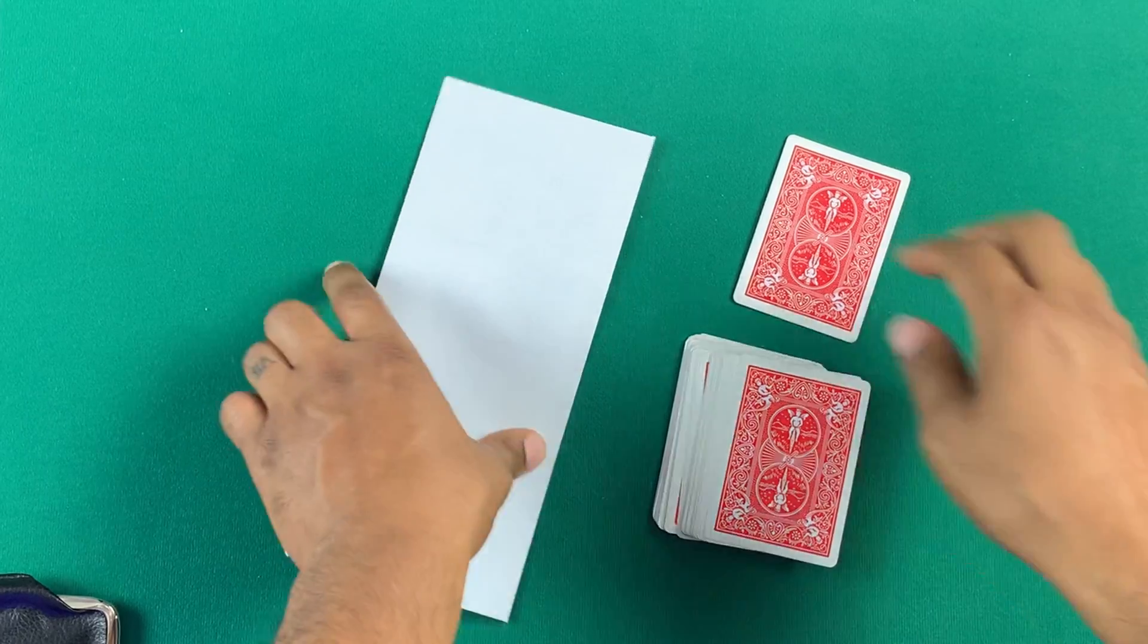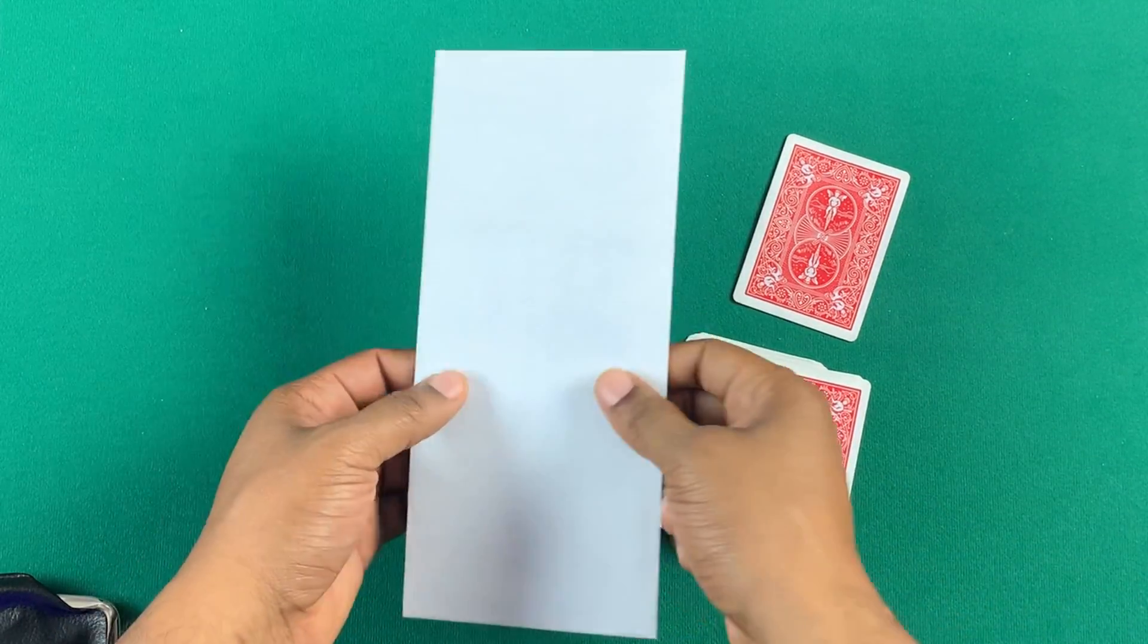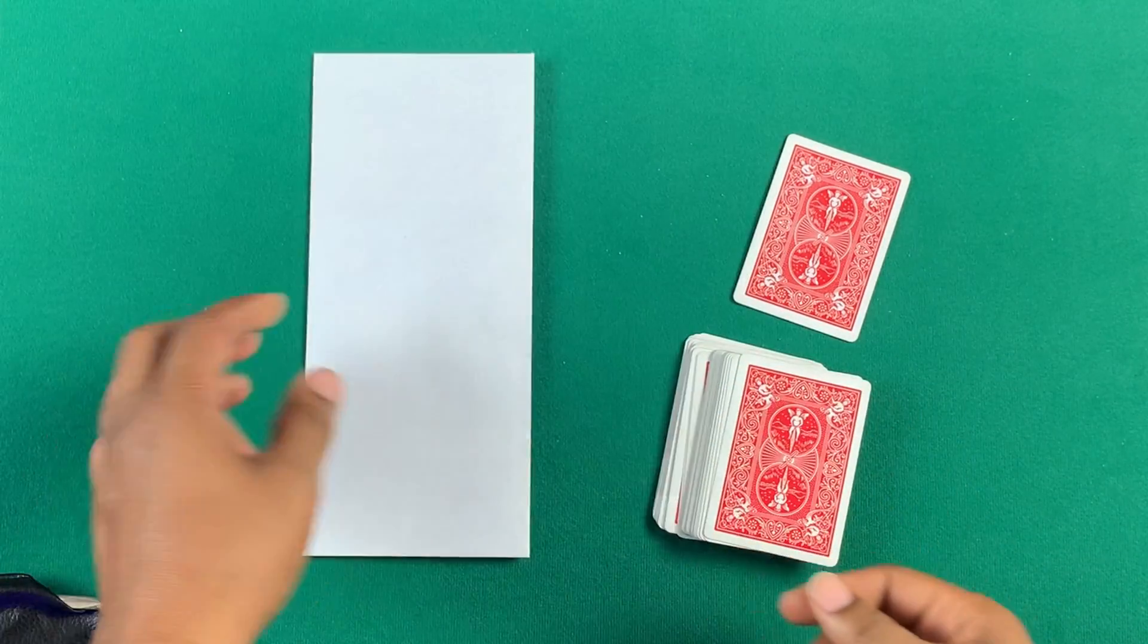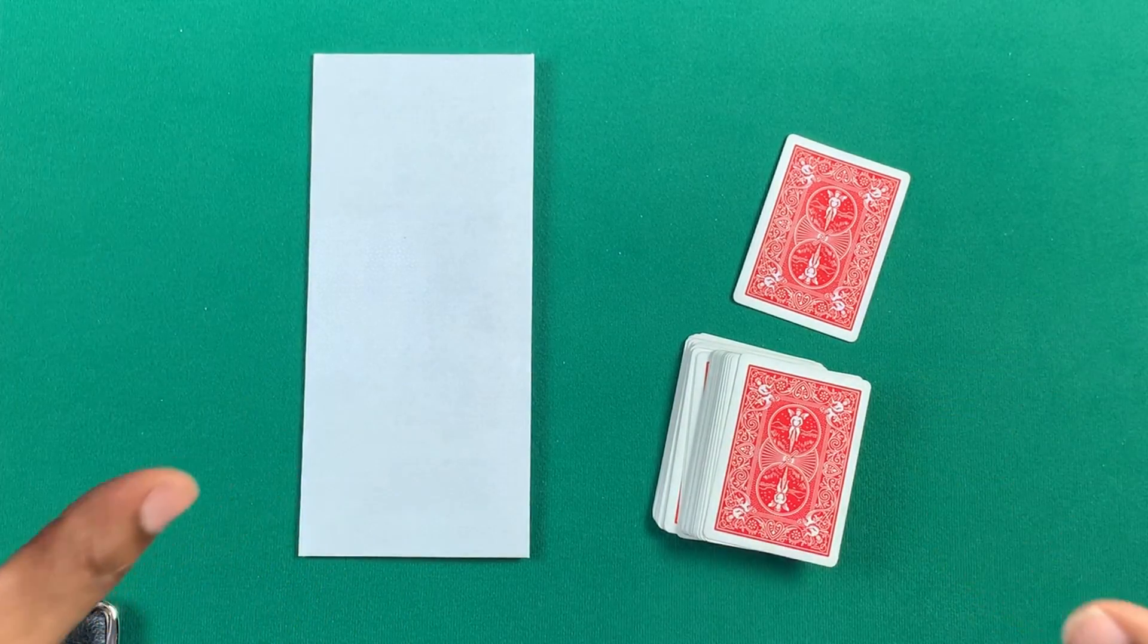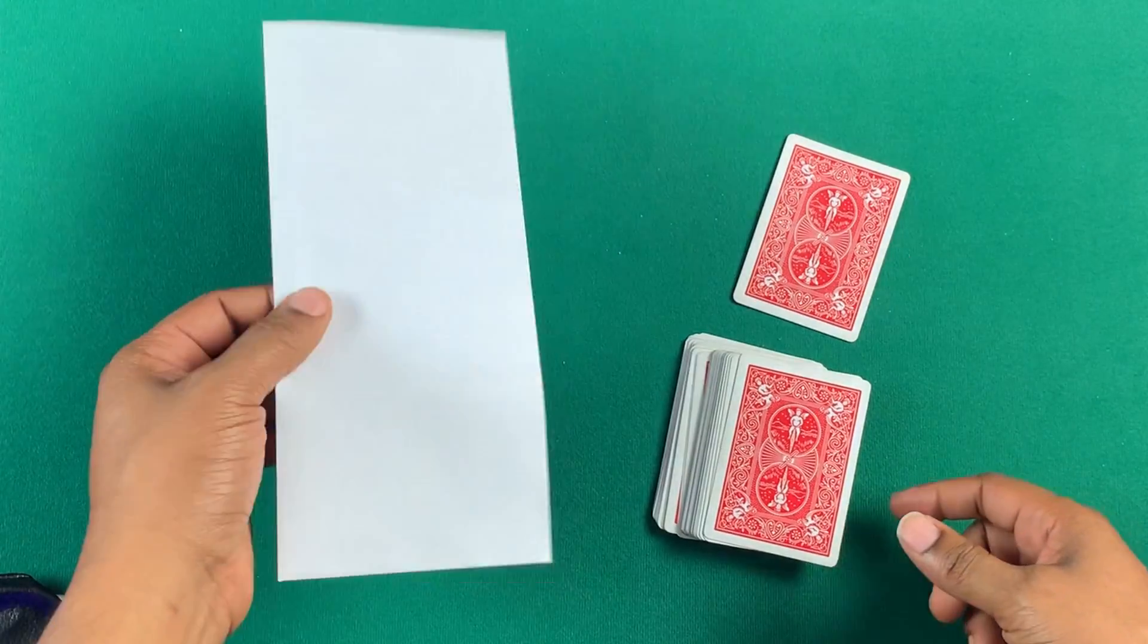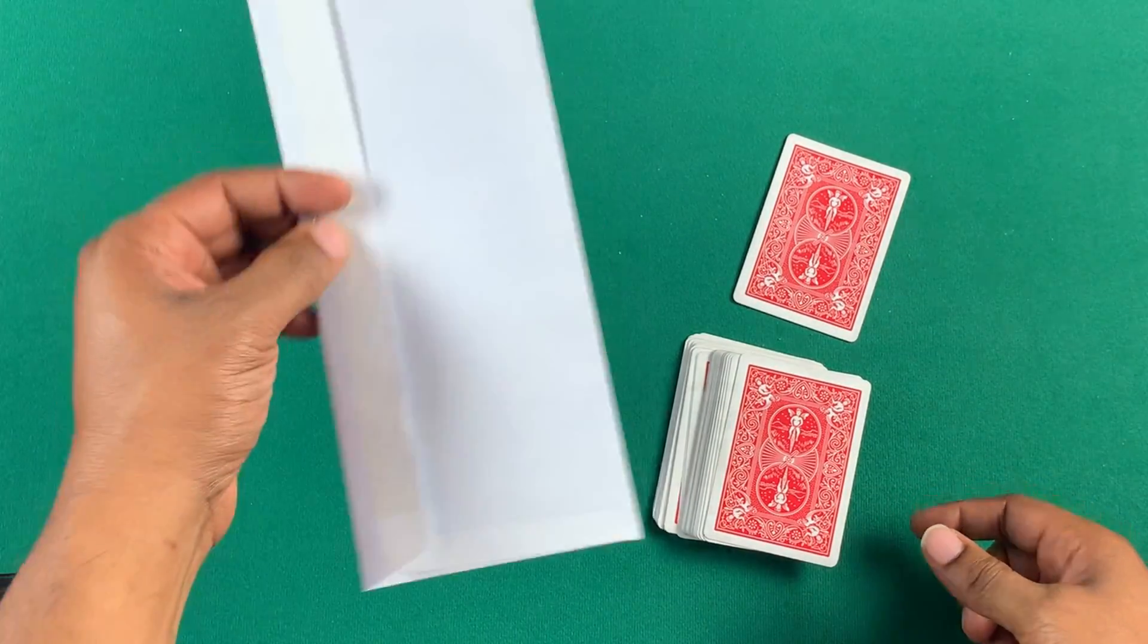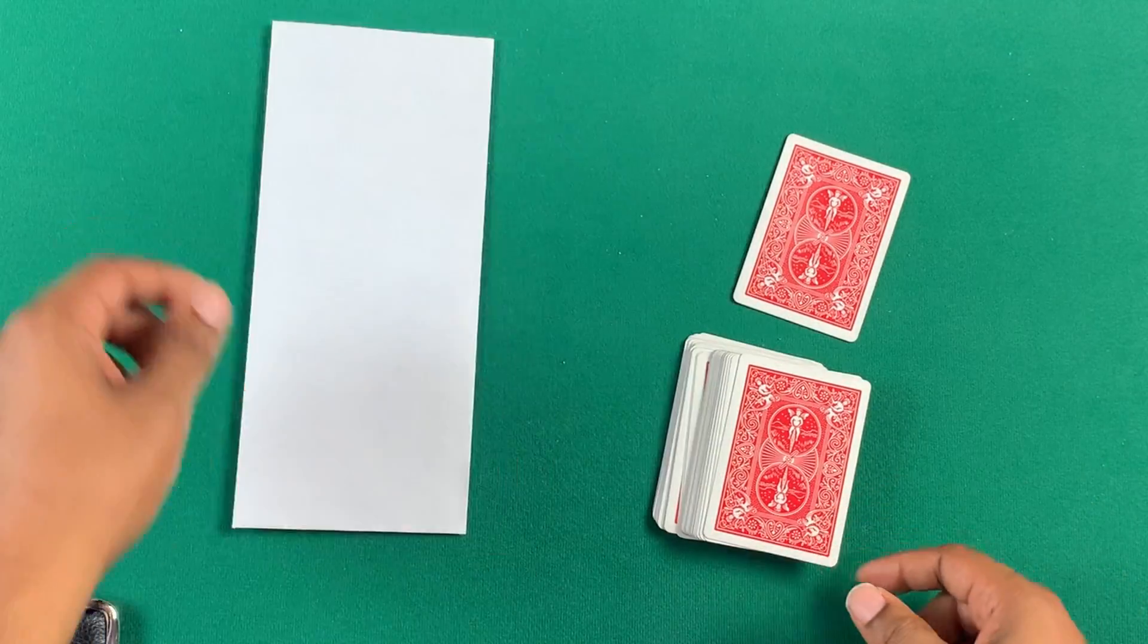Here's the explanation to the envelope card trick. So, this is a prediction trick. You know exactly what card they're going to pick. You don't even have to touch the deck. This is the secret, the envelope. The envelope is how you force them to pick that card. So, here's what's going to happen.